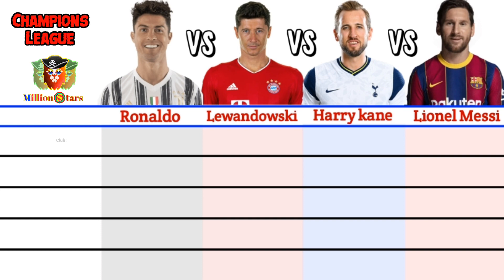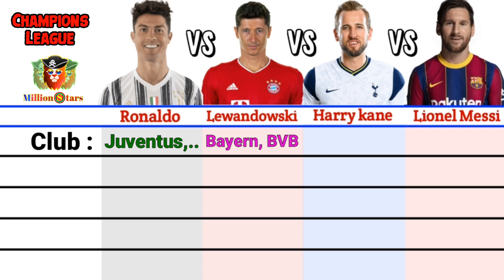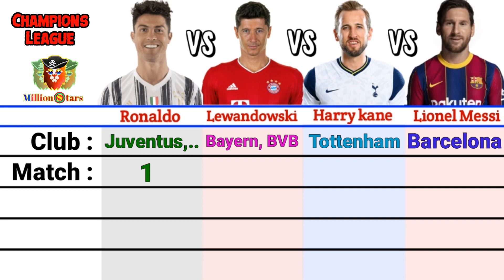Champions League comparison. Clubs: Ronaldo — Juventus, Manchester United, Real Madrid; Lewandowski — Bayern Munich, Borussia Dortmund; Harry Kane — Tottenham Hotspur; Messi — Barcelona. Champions League matches: Ronaldo 176, Lewandowski 96, Harry Kane 24, Lionel Messi 149.